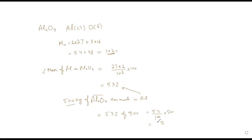5 times 53 gives 265 kilograms of aluminium. Do you understand? Yes. Any questions? No. Very good. Do you understand what relative formula mass means and how to calculate the percentage mass of an element in a compound?